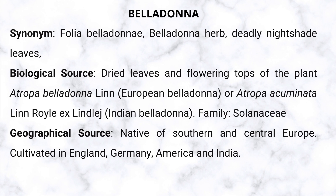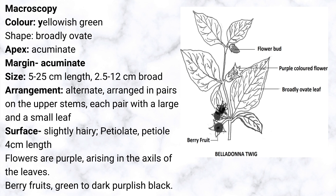The drug containing tropane alkaloid is Belladonna, synonymous with deadly nightshade. It is obtained from the plant Atropa belladonna, also known as Atropa belladonna, another species being Atropa acuminata, belonging to the family Solanaceae. Tropane alkaloids are mostly distributed in Solanaceae family drugs. The whole plant is used as a drug, especially the leafy portions. The leaf is broadly ovate in shape with an acuminate apex, arranged in pairs, slightly hairy on the surface with a 4 cm long petiole. Flowers are purple in color, arising in the axils of leaves, and the fruit is a berry — dark purplish black in color.